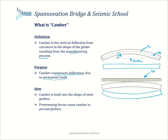How is camber achieved? In the case of steel girders, the camber shape is fabricated directly into the shape of the steel girders and we have excellent control over the camber values we would like to achieve. However, in the case of pre-stressed girders, it is the pre-stressing forces that result in camber, and we don't have a high degree of control on these camber values.